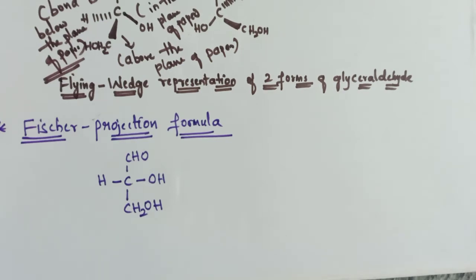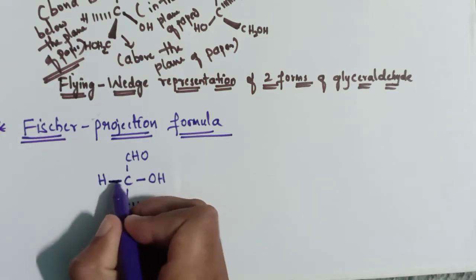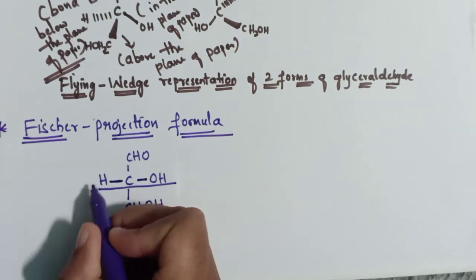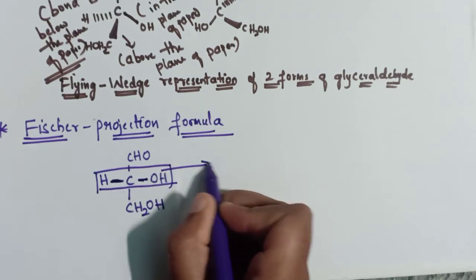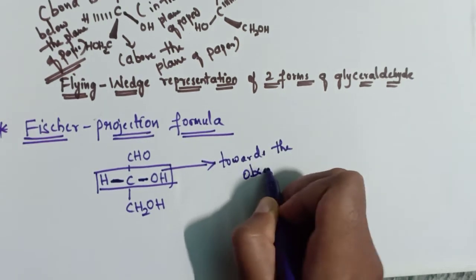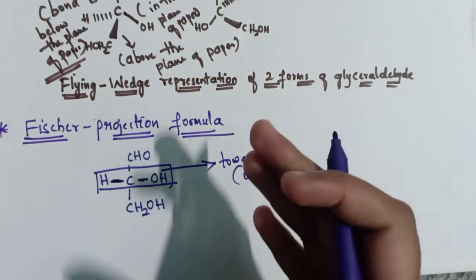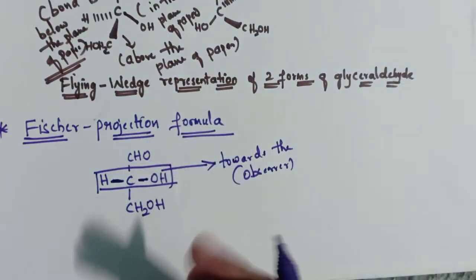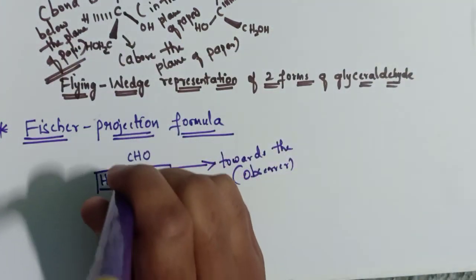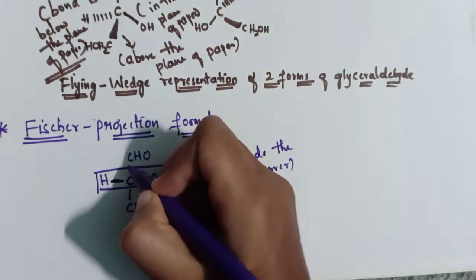Coming to the second type of projection, Fischer projection formula. In Fischer projection, all bonds are drawn as solid lines. However, you should understand that the horizontal bonds — both left and right — point towards the observer. These horizontal bonds are projecting above the plane of paper. And the vertical bonds are pointing away from the observer.